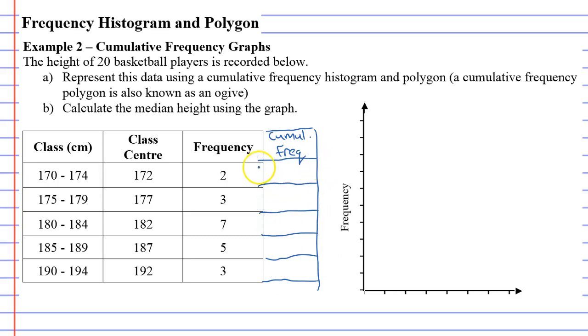So, our frequency will accumulate. Here we put a 2, then 2 plus 3 is 5, 5 plus 7, 12, 12 plus 5, 17, and 17 plus 3, 20. And what is positive here is we've finished on 20. We want that because we know we have 20 basketball players.